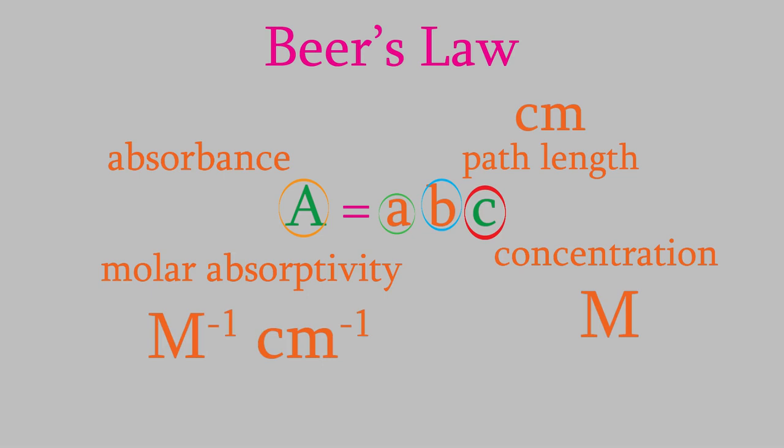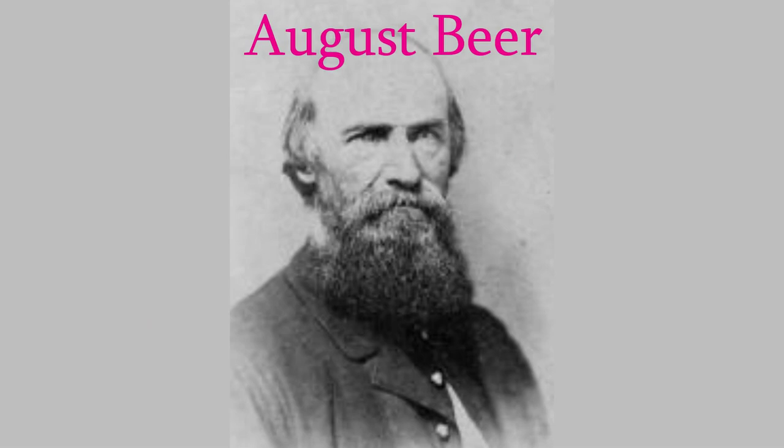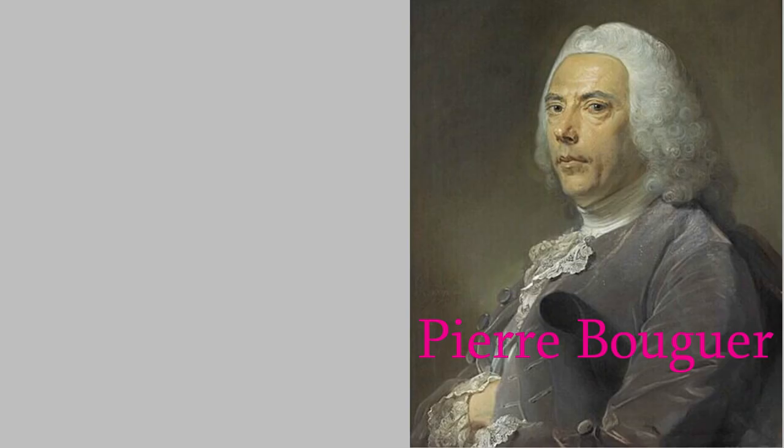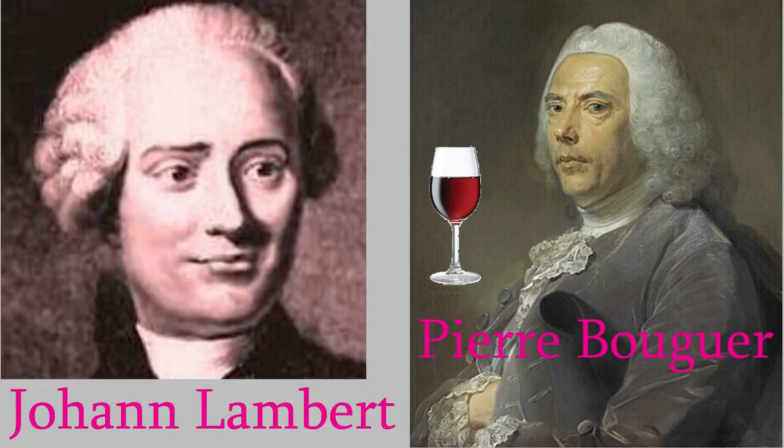Beer's law was named for the German physicist August Beer, who wrote the equation as we now know it in 1852. But he actually wasn't the discoverer of the relationship between concentration and absorbance. It was originally discovered by the French physicist Pierre Bouguer in 1729, who realized how the path length and the absorbance were connected when he was contemplating the color of light that passed through a glass of red wine. Later, in 1760, the German physicist Johann Lambert realized that concentration and absorbance were also related, almost a hundred years before August Beer formulated his famous equation.